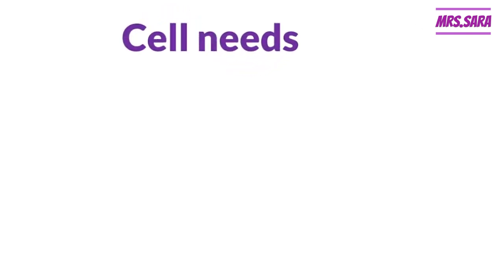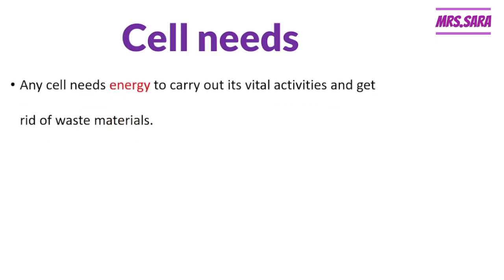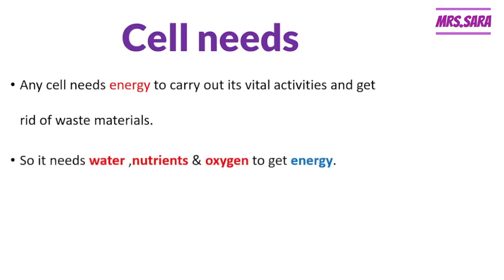All cells, Primary 6, have their own needs. Any cell needs energy to carry out its vital activities and also to get rid of waste material that forms in the cell during those activities. To have energy, cells need three things: they need water, nutrients, and oxygen to get energy.